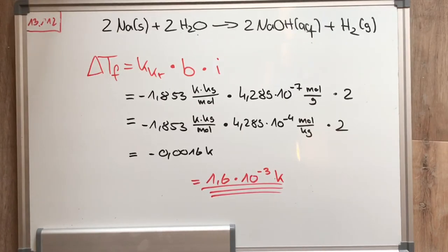Now we put the calculated molality into our formula for the freezing point reduction and get a temperature of 1.6 × 10^-3 Kelvin.